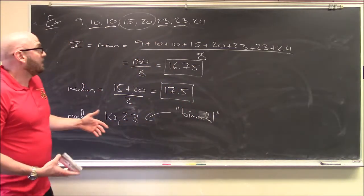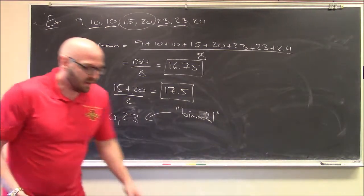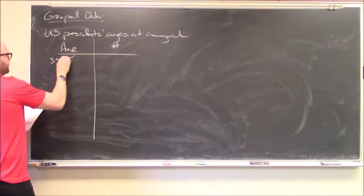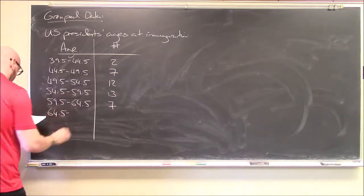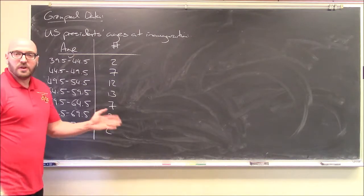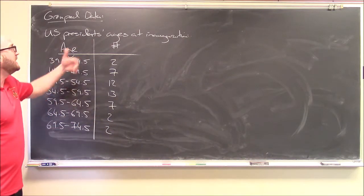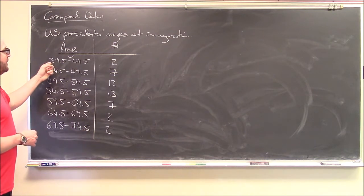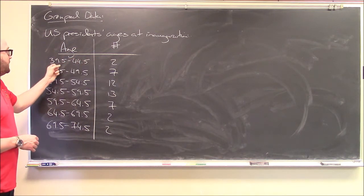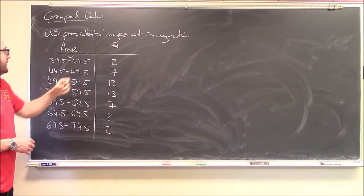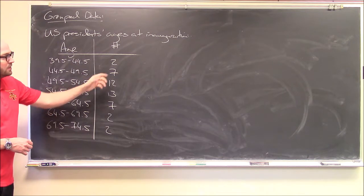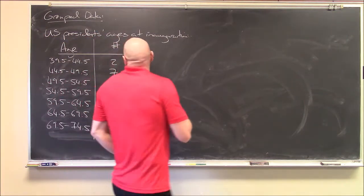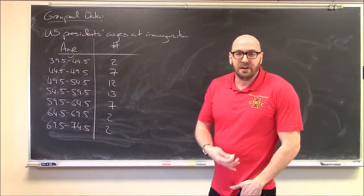That was ungrouped data. Now let's move on to grouped data, where things are a little bit different. Here's an example: instead of listing all individual ages of U.S. presidents at inauguration, I've grouped them into intervals. The number of presidents between age 39.5 and 44.5 is two, between 44.5 and 49.5 is seven, and so on. The question is, how do you find the mean and the median for grouped data like this?